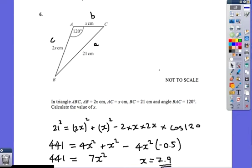Minus 0.5 times minus 4 is going to give us 2x squared. So therefore, I've got 4x squared plus 2x squared plus another x squared, so I'll get 7x squared. So I get 441 is equal to 7x squared. Divide both sides by 7, and then square root, I'm going to get x is 7.9. So a few questions all to do with trig non-right-angled triangles.